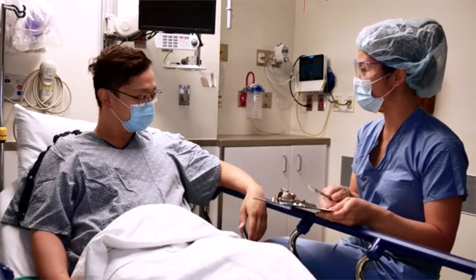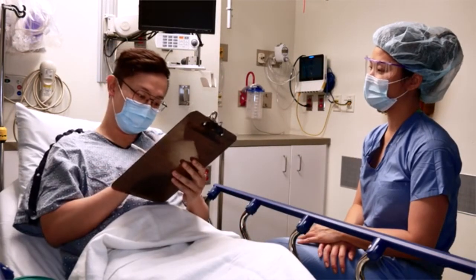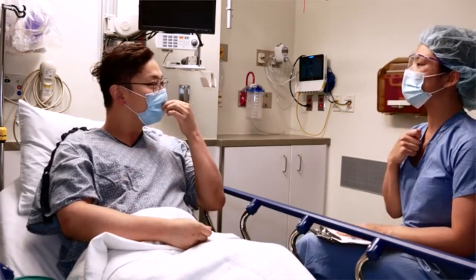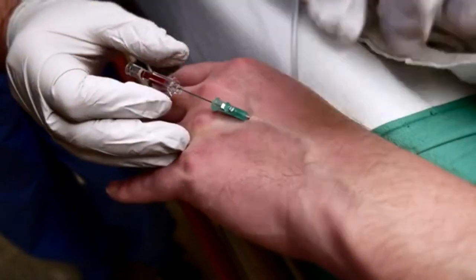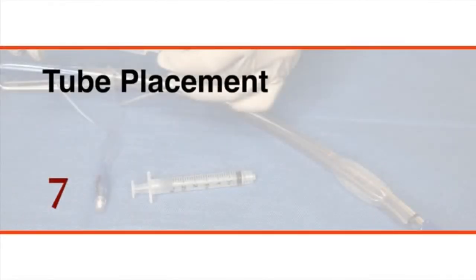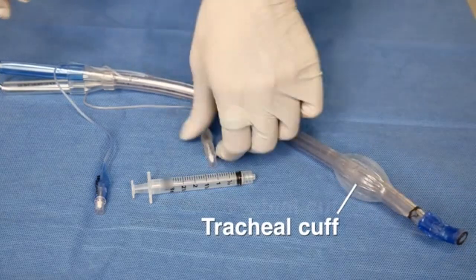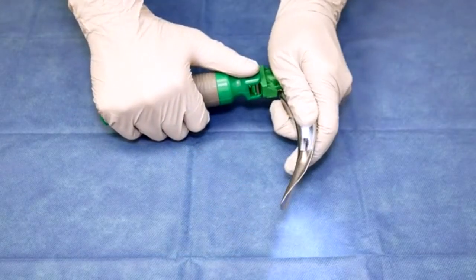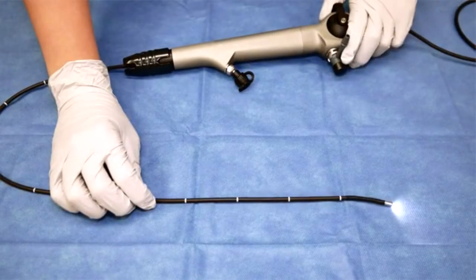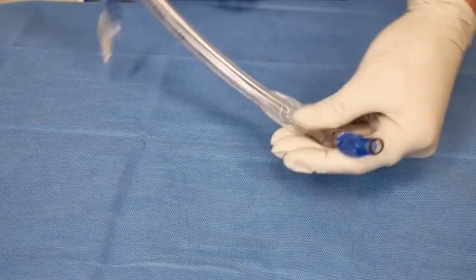Explain the procedure to the patient, including descriptions of the benefits, risks, and possible complications. Obtain written informed consent from the patient or a proxy. Perform an airway examination as done for single-lumen endotracheal intubation. Establish intravenous access and set up appropriate monitoring devices before inducing general anesthesia. Inflate the tracheal and bronchial cuffs and look for any leaks. Prepare the laryngoscope and bronchoscope and confirm that each is functional. Consider shaping the stylet to aid in placement of the tube and applying lubricant to the tube.